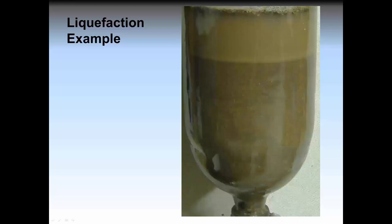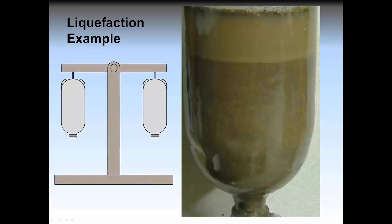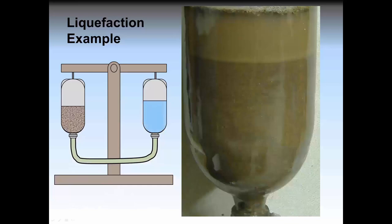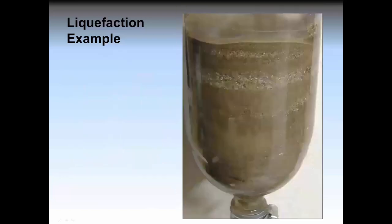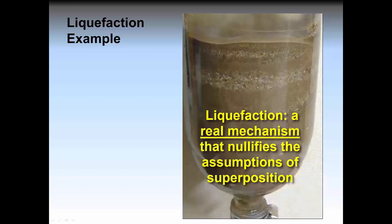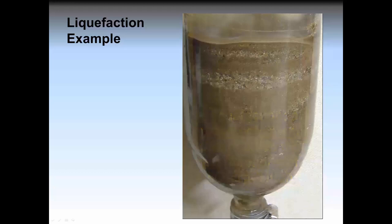You can see liquefaction for yourself by experiment. Get a couple of 2-liter plastic bottles and fix them to a teeter-totter. Fill one bottle halfway with any combination of mixed soil and connect a hose between the bottles. Then add water to the other bottle and very slowly tip the bottles back and forth. Just a few cycles of liquefaction will produce layers all at once. So while superposition is a useful principle if applied carefully, it does make assumptions that can lead to completely incorrect conclusions.